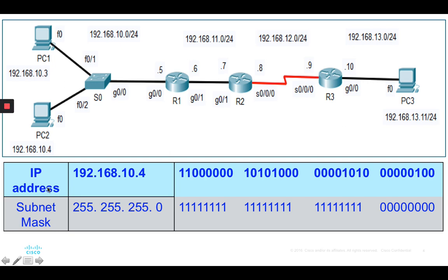Sometimes the question may not give you a topology — just IP addresses and subnet masks — and you need to identify which network they belong to using the AND operation. Convert 192.168.10.4 to binary: 192 becomes 11000000, 168 becomes 10101000, 10 becomes 00001010, and 4 becomes 00000100. For the subnet mask with /24, you have 24 ones and the rest zeros, giving 255.255.255.0.